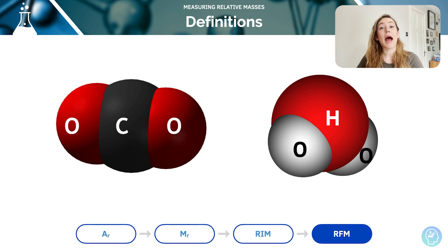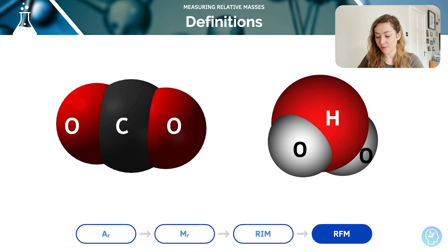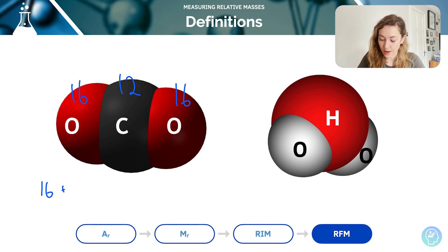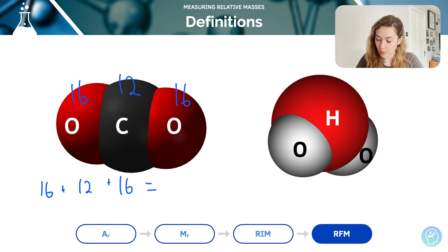Now we have the relative formula mass. These are molecules, but we also call it relative formula mass because we've got different types of atoms involved — such as oxygen and carbon, or oxygen and hydrogen. So we add them together. For CO₂: 16, 12, 16 — add those together to give us our relative formula mass. Then for water, we have 16, 16, and 1.